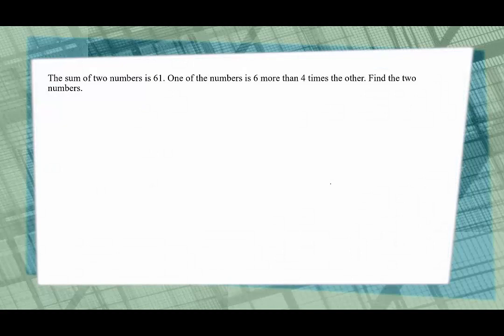In our first example, we're told that the sum of two numbers is 61. One of the numbers is six more than four times the other. Find the two numbers. First thing we know we're dealing with two unknown numbers. What do we want to call them? Our default is typically x and y, so we'll go ahead and use that.